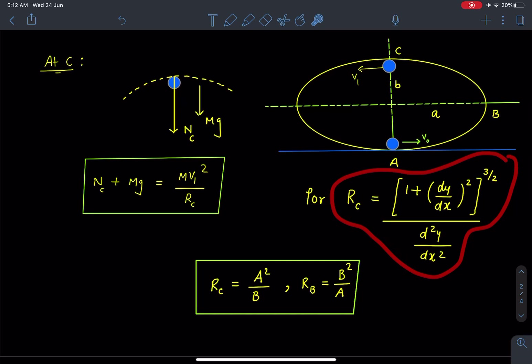So if we use this relation of radius of curvature by using equation of curve, we are going to get radius of curvature at C as a²/b, and radius of curvature at B as b²/a. These are standard results.